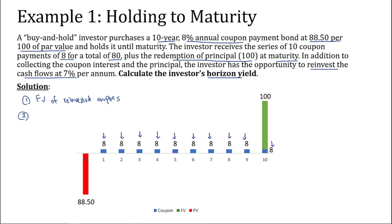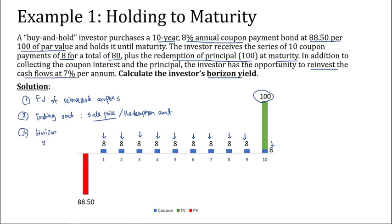In the second part, we find out the ending amount — do we use the sale price or the redemption amount? We use the redemption amount if the investor holds the bond until maturity, which in this case is $100. But if the investor sells prior to maturity, for example in year 6, we have to find the price they can sell at in year 6. In this case the answer is $100. Then in step three, we calculate the horizon yield, which is the internal rate of return between the PV and the future value — the redemption amount and the future value of the reinvested coupons.